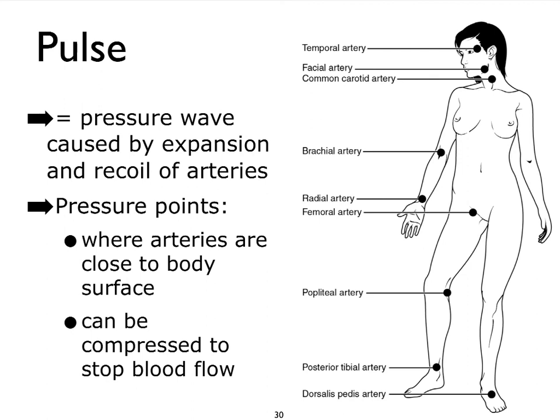Pulse pressure creates a pressure wave resulting in the distension and recoiling of arteries, and we can feel this as a pulse. There are different pulse pressure points throughout the body. Most often we take a patient's pulse at the radial artery or sometimes the common carotid artery, but there are many other locations. Depending on the patient's condition, positioning, disease, or injury, you may need to use a different location, so it's important to be familiar with these different pulse points.